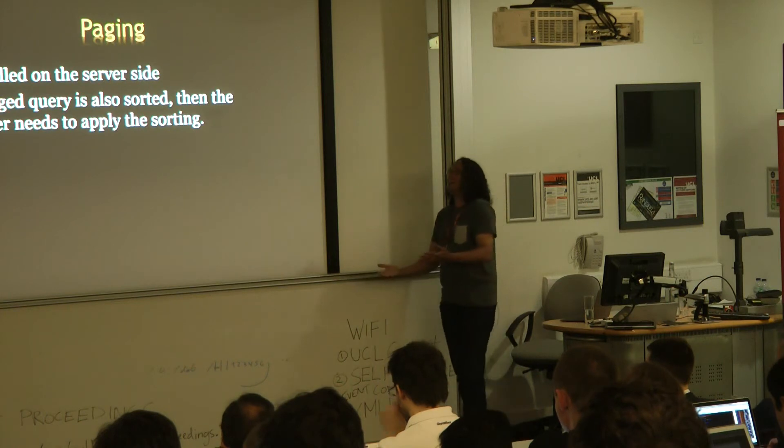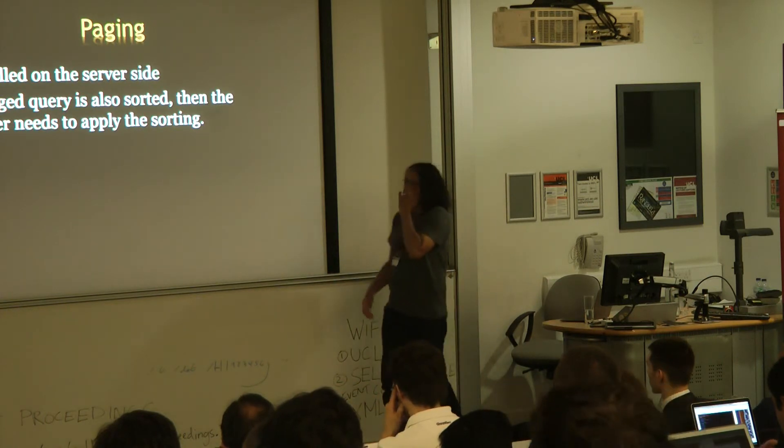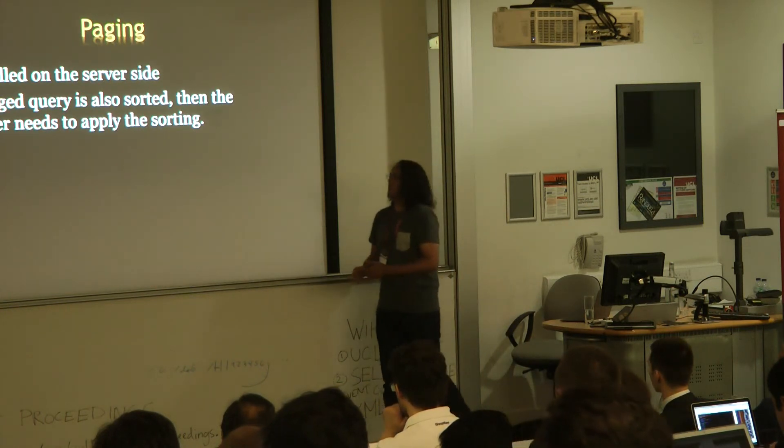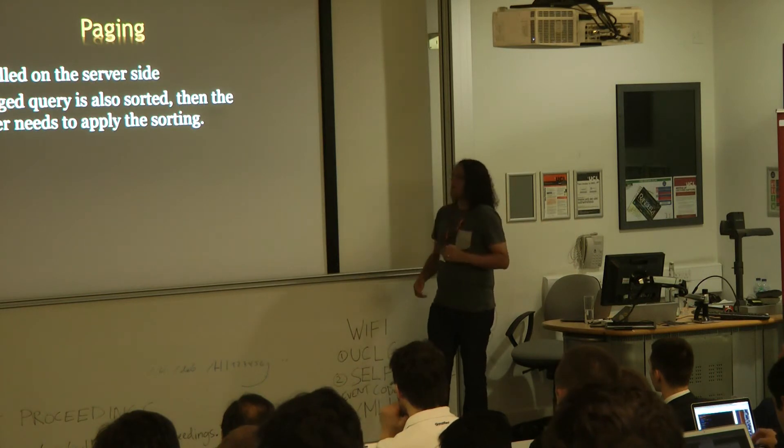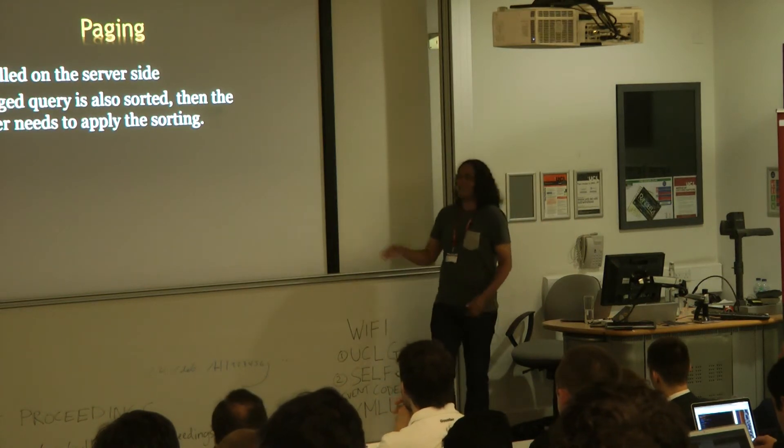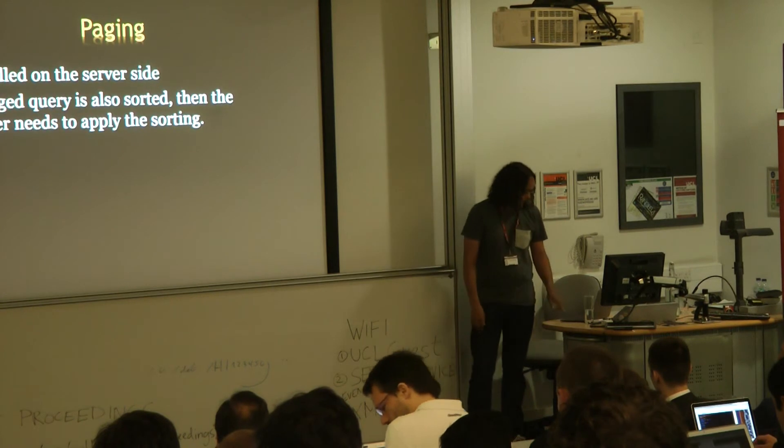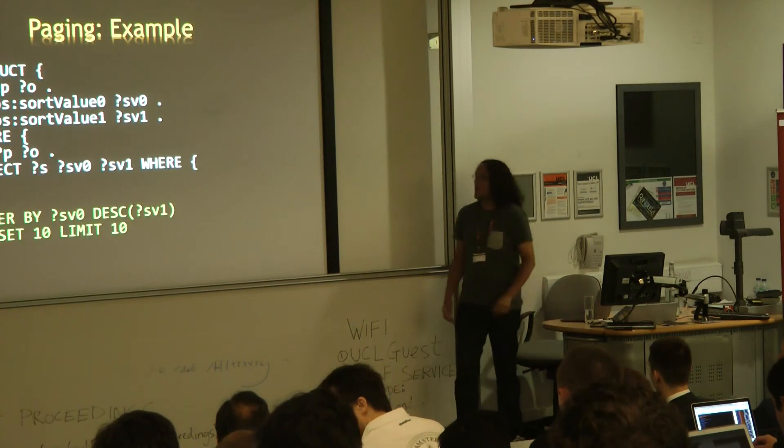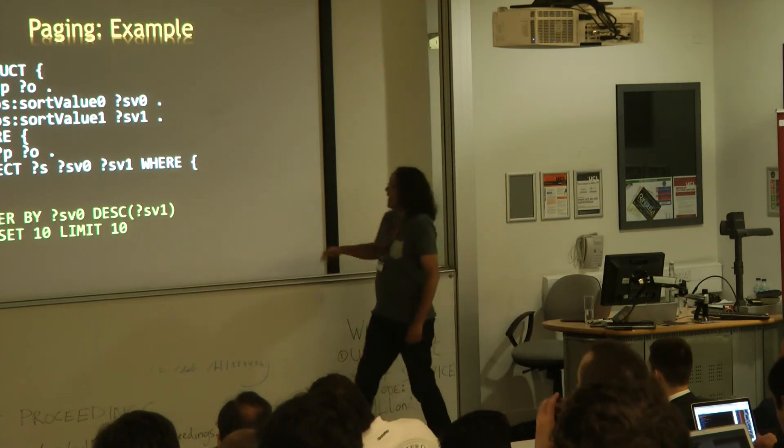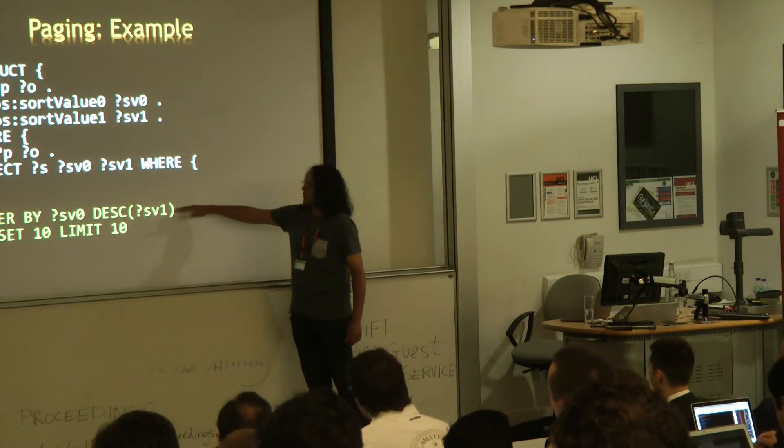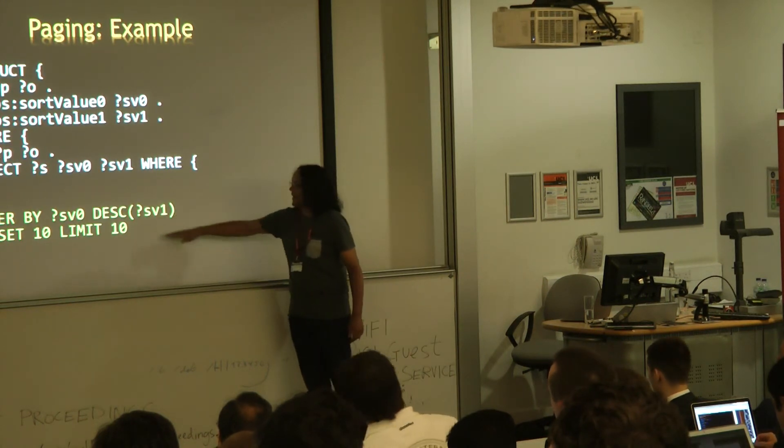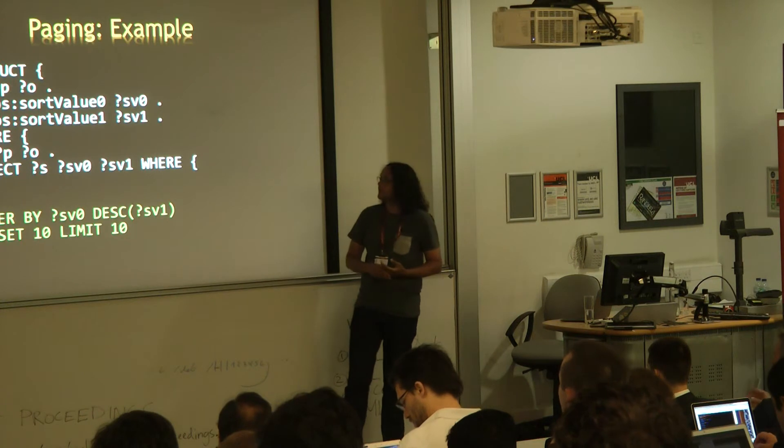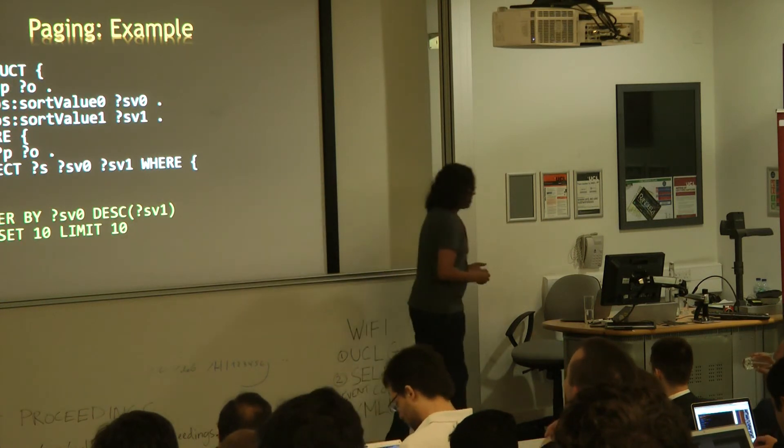Of course, that kind of falls down when you want to do some paging. Because if you want to ask for a particular chunk of the results, rather than all of the results, you're going to have to ask the server to do the sorting, otherwise it's going to give you the wrong thing. So, when we're doing paging, if we need to do some sorting, we make sure that the sort order is added, and then we do the paging. But basically the same client side process applies.